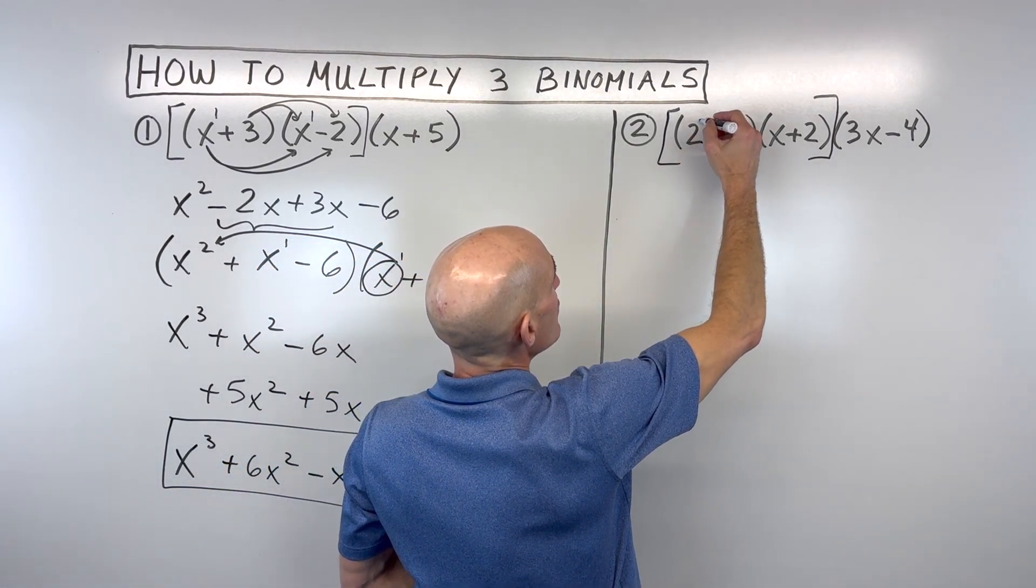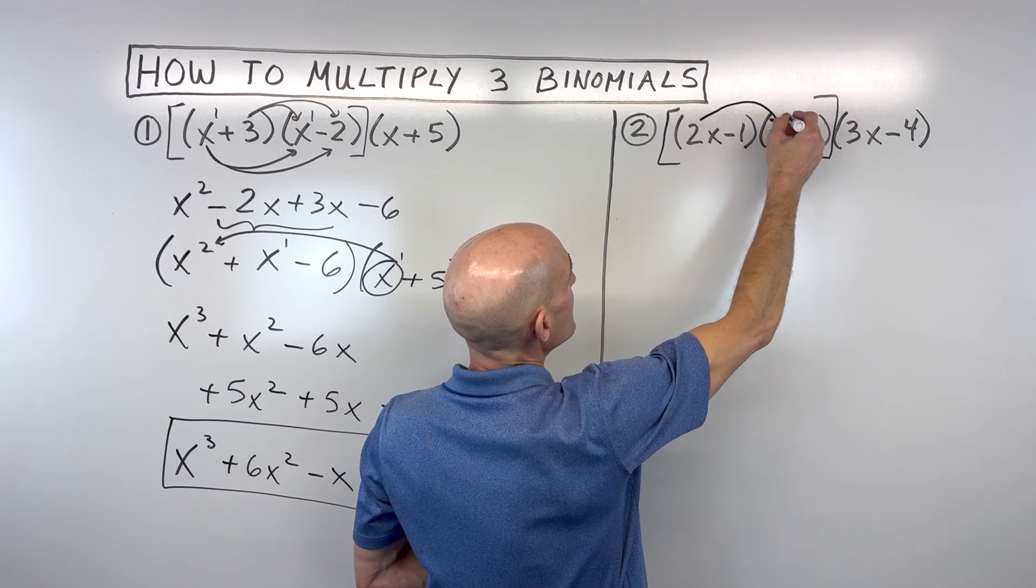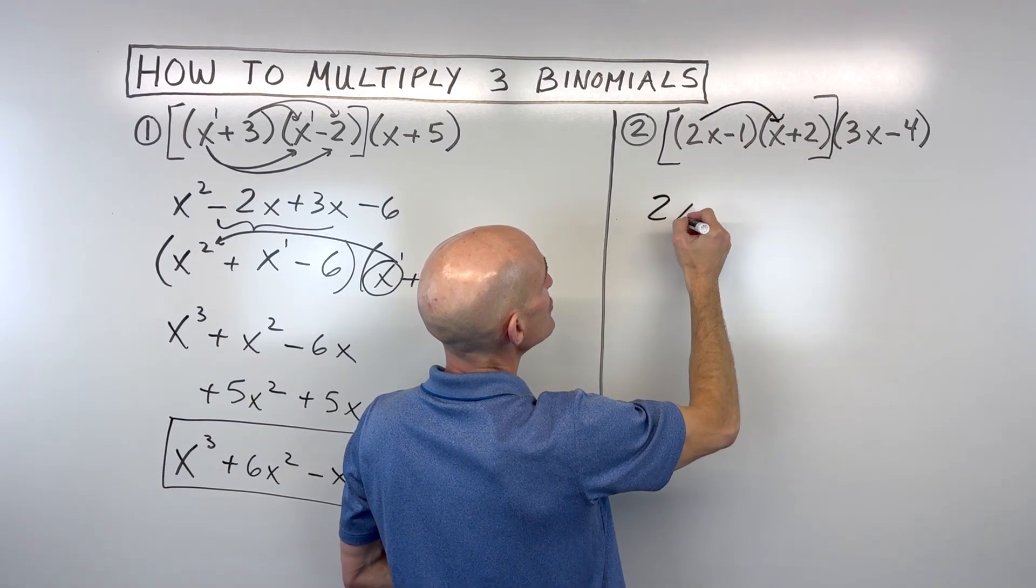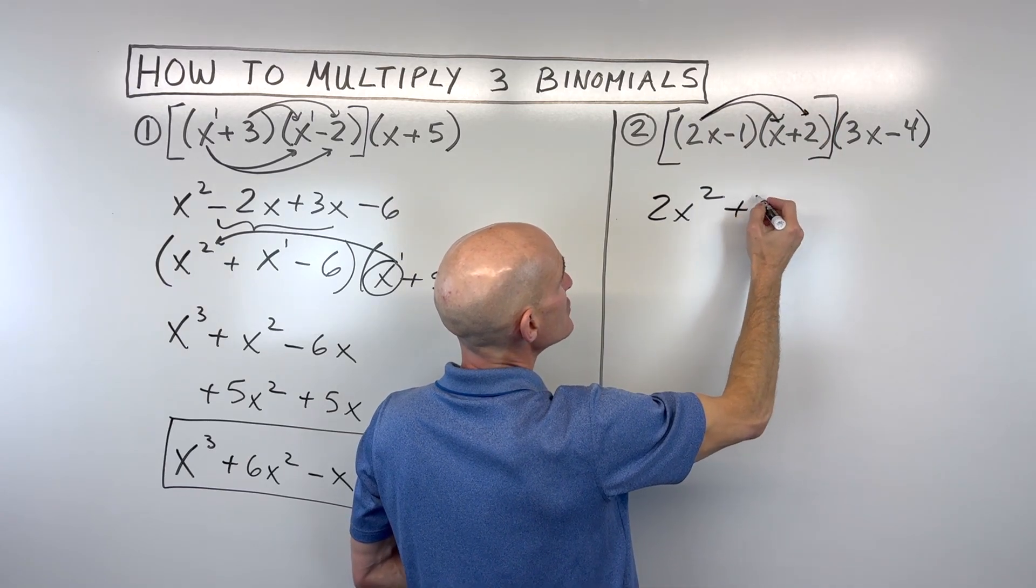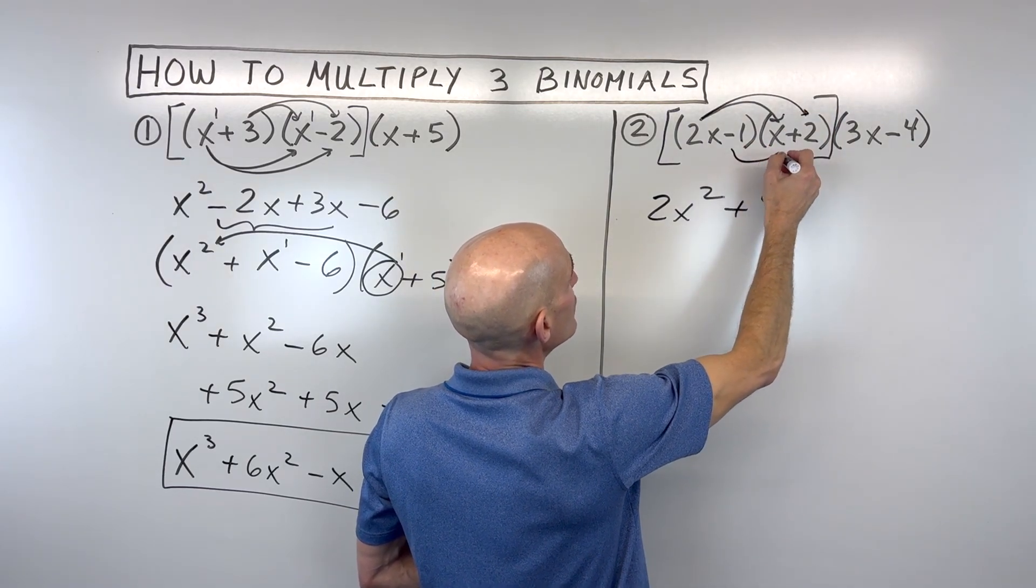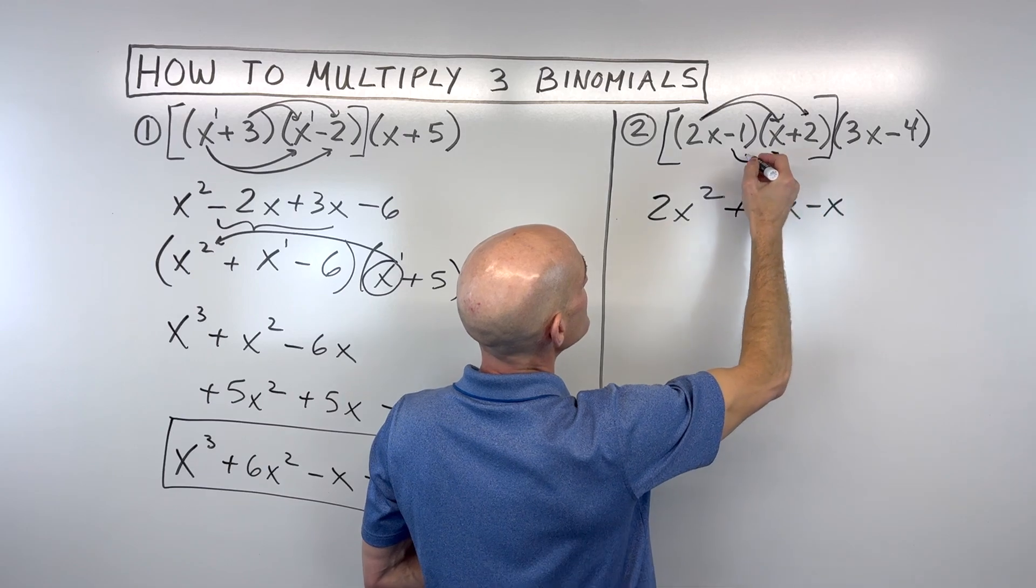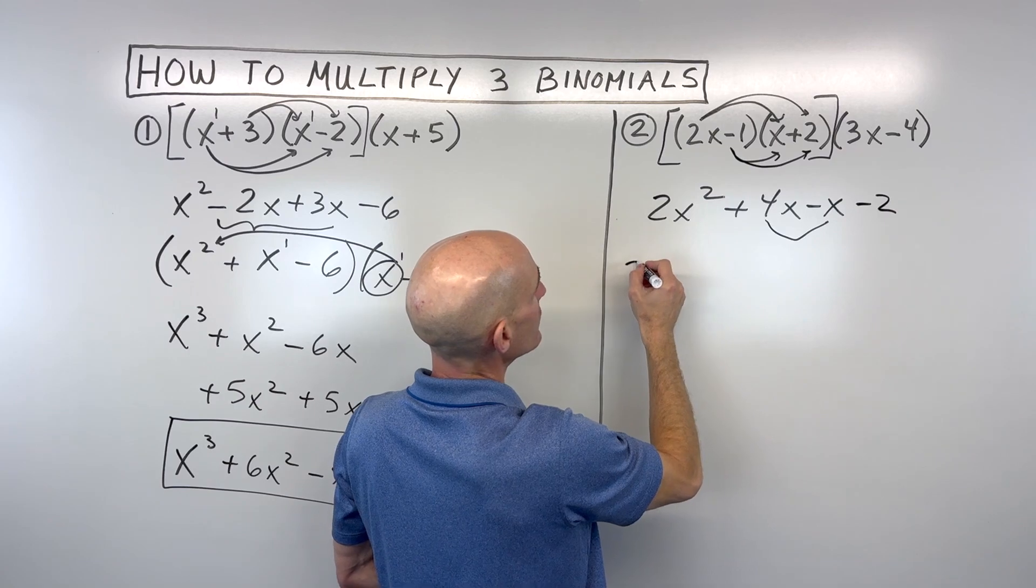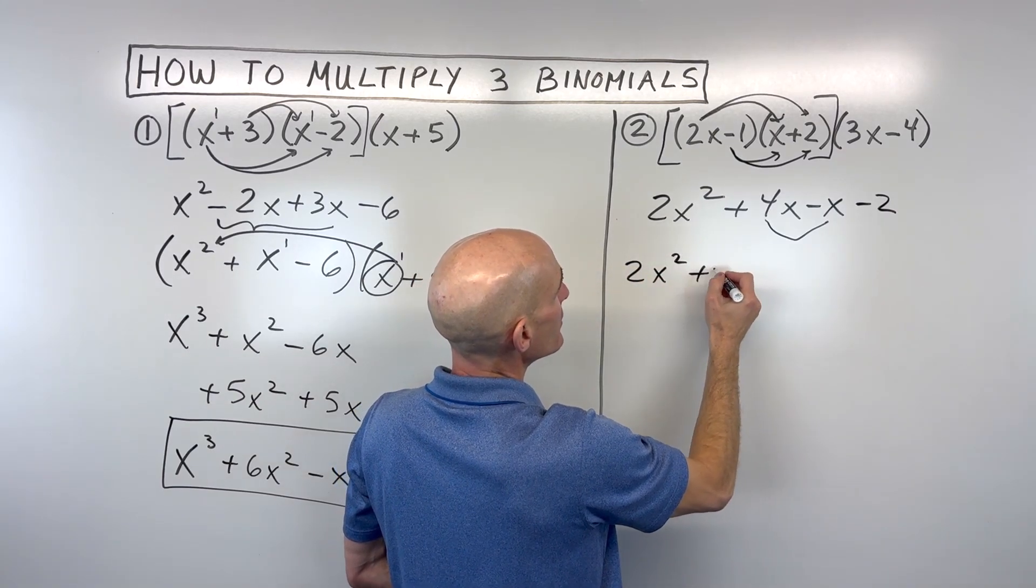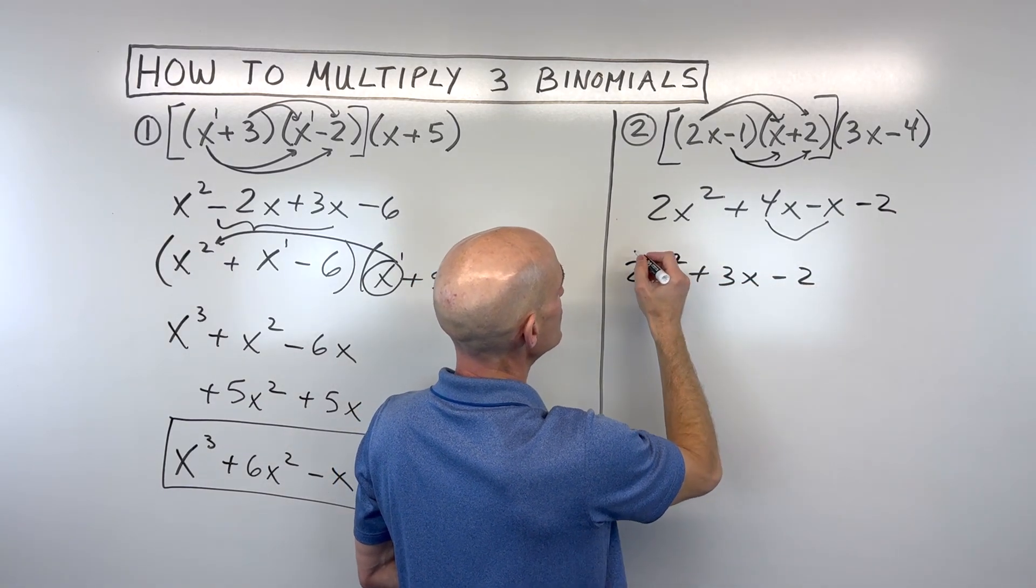So I'm going to use the distributive property twice. I'm going to take the 2x times x, which gives us 2x squared, then 2x times positive 2 is 4x, then negative 1 times x is negative x, and negative 1 times 2 is negative 2. Let's go ahead and combine like terms together. So we get 2x squared plus 3x minus 2.